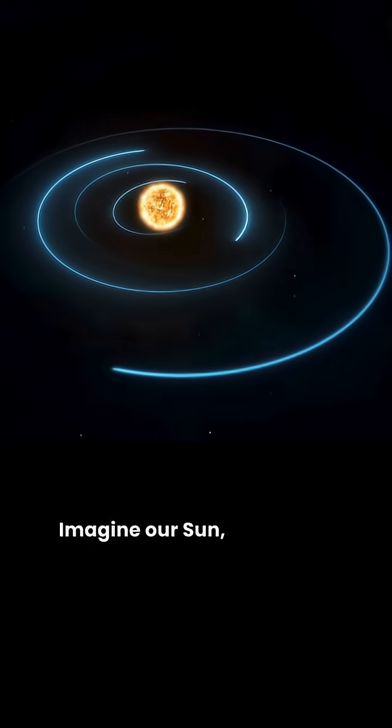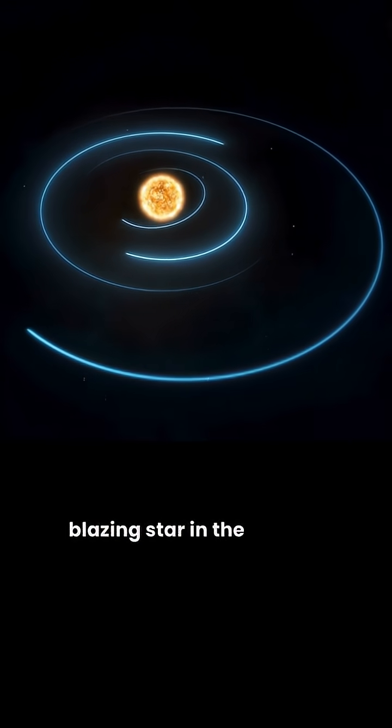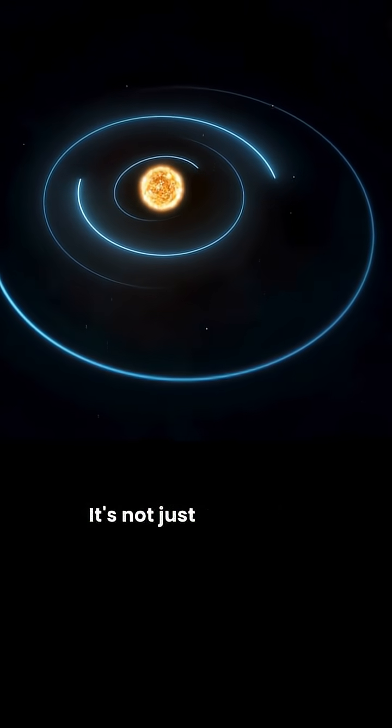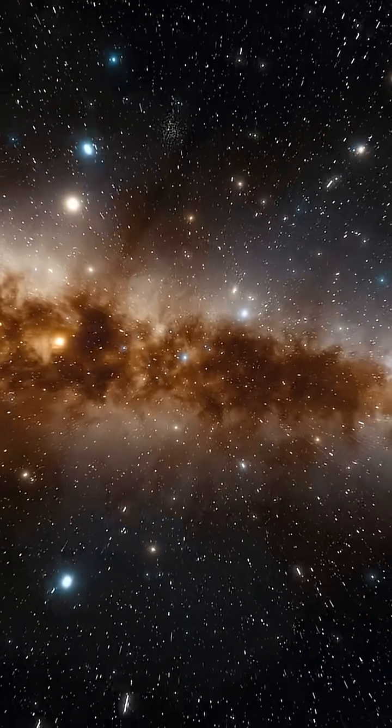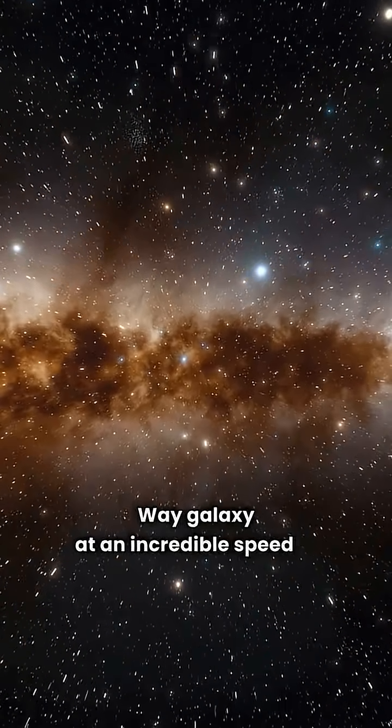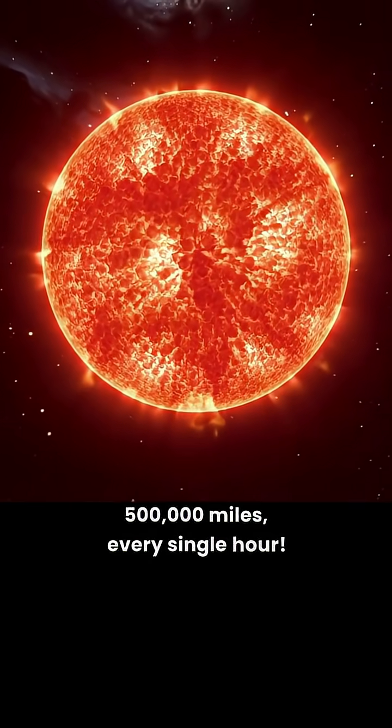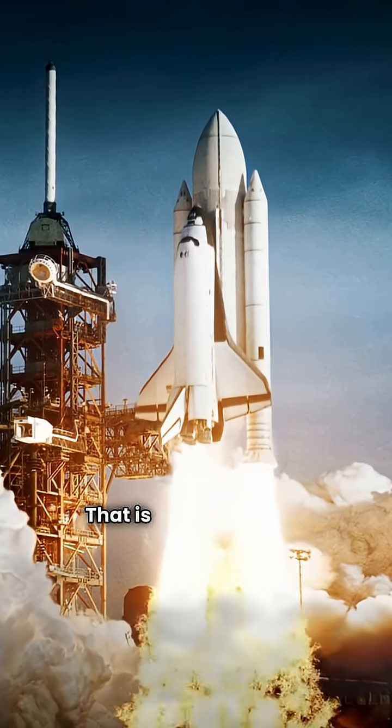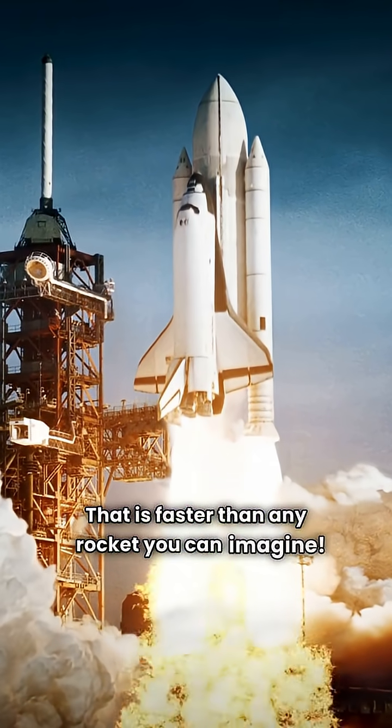Imagine our sun, that giant blazing star in the middle. It's not just sitting still in space. Our sun is zooming through the Milky Way galaxy at an incredible speed of 500,000 miles every single hour. That is faster than any rocket you can imagine.